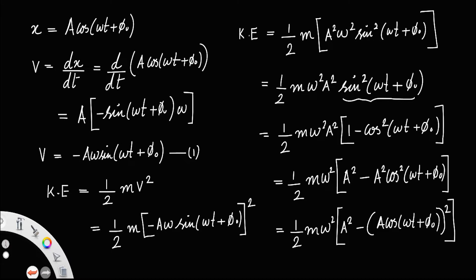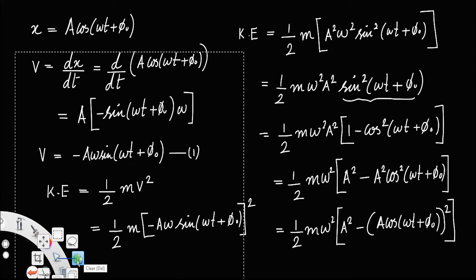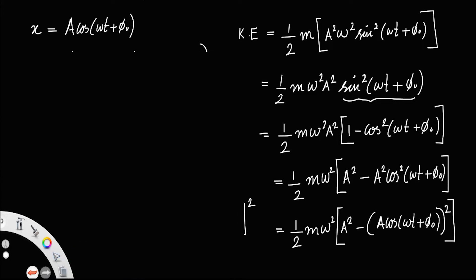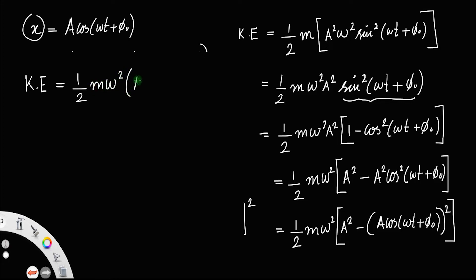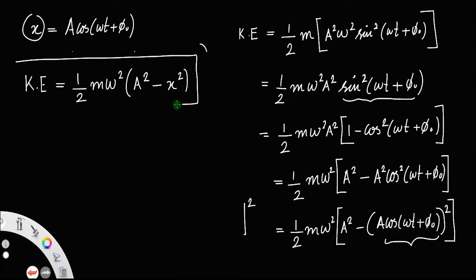Now, looking at the first equation — the equation of displacement — A cos(ωt + φ₀) is actually x. So the kinetic energy is equal to ½mω²(A² - x²). This is the expression for kinetic energy.